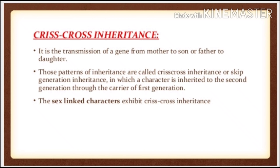The first criteria is that the character should be transferred from a mother to son or from father to daughter. The second criteria is that the character-transferring mother or father should be a carrier. What do you mean by a carrier? Carriers are those individuals having a particular gene capable of causing a particular disease, but that gene is not expressing in them, because that character is in heterozygous condition in them. That is why they are called as carriers.